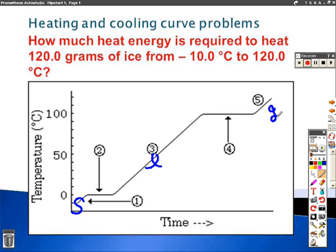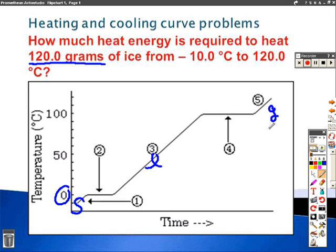You have 120 grams of ice, and you know this is ice — it's water — because at zero degrees you have freezing and melting, and at 100 degrees it's going from a liquid to a gas, boiling and condensing, or evaporating. So you're at negative 10 degrees Celsius, which is right here on your graph. In this area you're heating up from negative 10 to zero — that's one step.